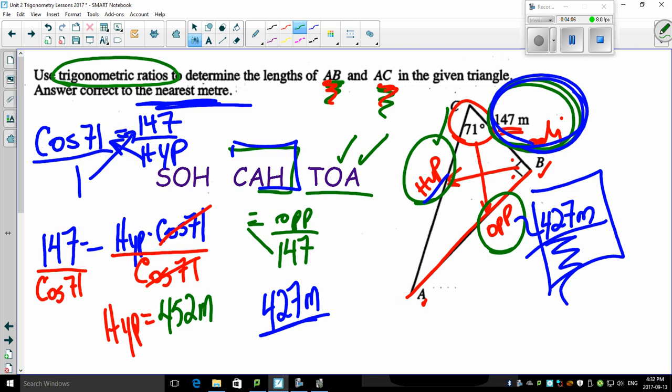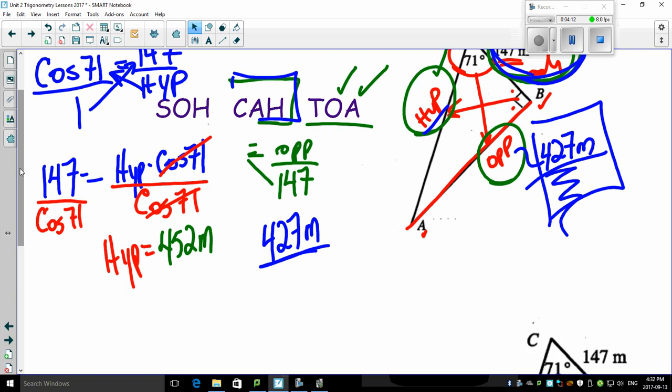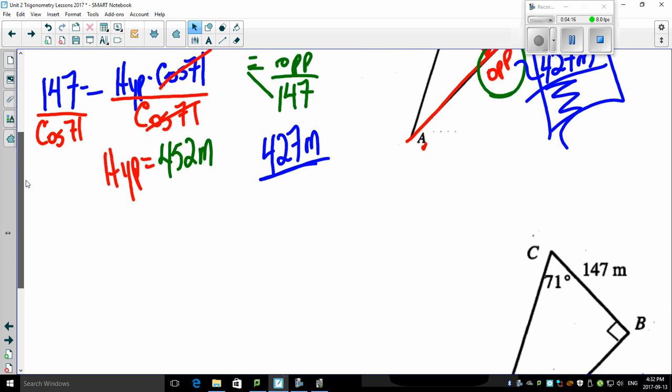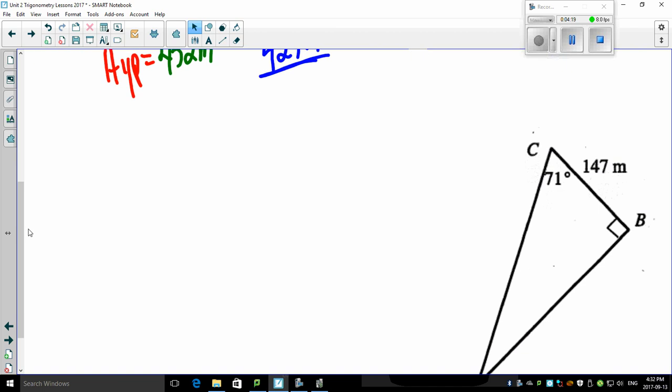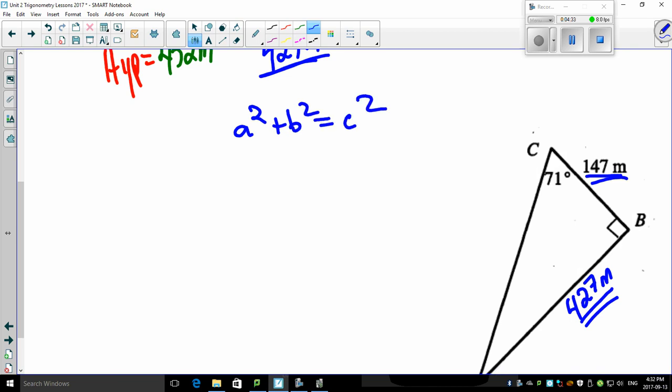Now, you can do that. Or, you'll notice down here, I've actually written this out a second time. Remember that this actually is 427 here. You can use, once you are at that stage and you have this, you can use your old faithful, a squared plus b squared equals c squared. Check it out. There's 147 squared plus 427 squared. Again, you might get an answer that's a little off, because 427 was a rounded number.